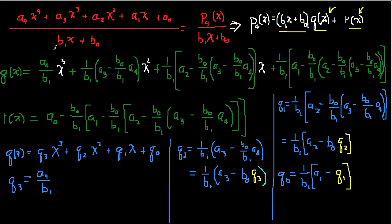I have an example here where I'm taking a general fourth-order polynomial with real coefficients — a₄x⁴ + a₃x³ + a₂x² and so on — and dividing it by b₁x + b₀. When dividing two polynomials like this, I write it as p₄(x) divided by b₁x + b₀.